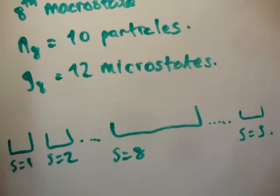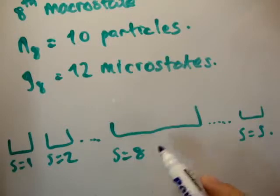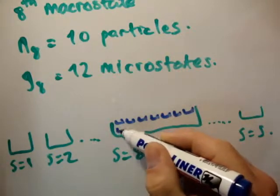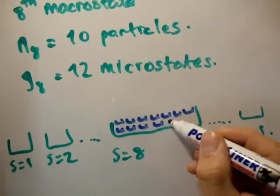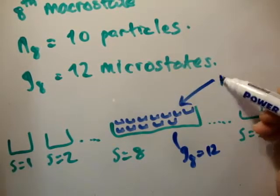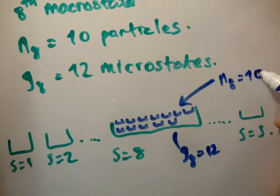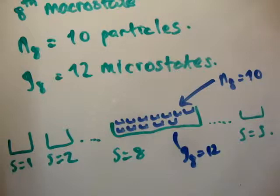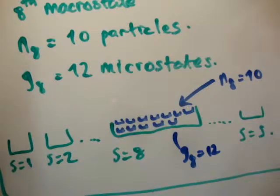Alright, so in the eighth macrostate we have 12 microstates: 1, 2, 3, 4, 5, 6, 7, 8, 9, 10, 11, 12. So g sub 8 equals 12. And into it I'm going to put n sub 8 equals 10 particles. So I'm going to put 10 particles into 12 microstates in the eighth macro box. If you really want, I suppose you could put a large box out here and say this is the total. I don't know, that might be confusing. Hopefully it's not too confusing.